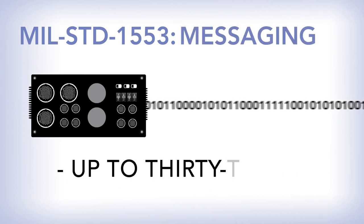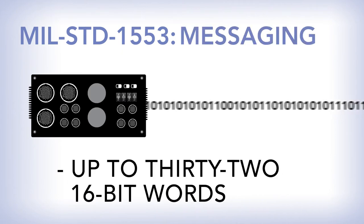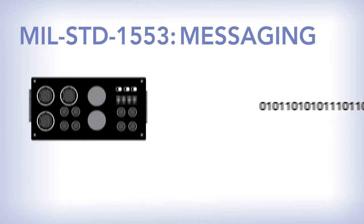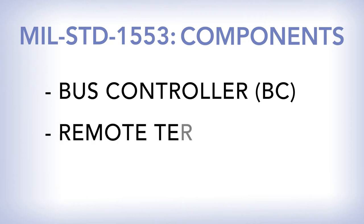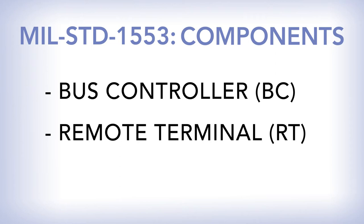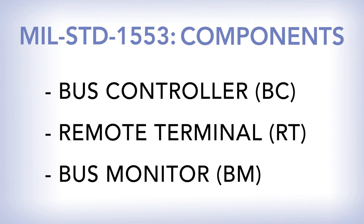1553 messages consist of up to 32 16-bit words. There are three major components of the system: a bus controller, or BC, which is usually part of the mission computer; remote terminals, known as RTs, and sub-addresses that might be a missile launcher or an instrument giving input to the mission computer; and the bus monitor, which passively allows you to monitor the flow of data.